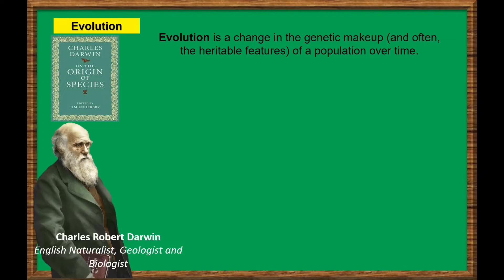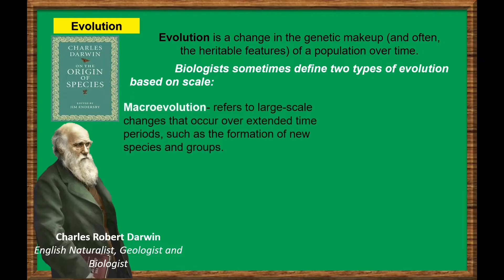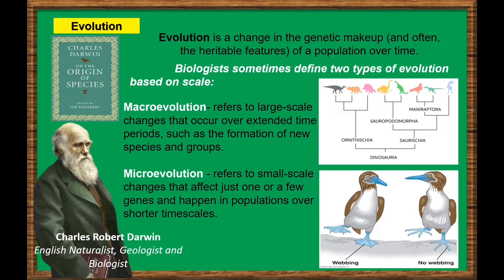Biologists like Darwin sometimes define evolution into two types based on scale. We have macroevolution, which refers to large-scale changes that occur over extended time periods, such as the formation of new species and groups. And microevolution, which refers to small-scale changes that affect just one or a few genes and happen in populations over shorter timescales. Remember that microevolution and macroevolution aren't really two different processes — they are the same process, evolution, but occurring on different timescales.